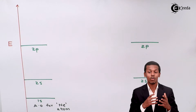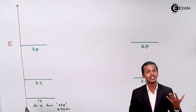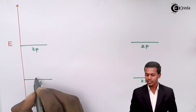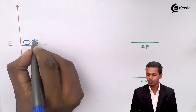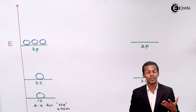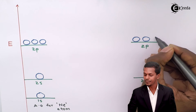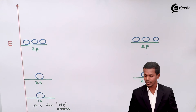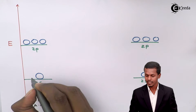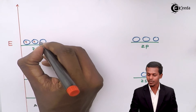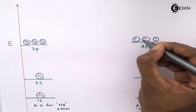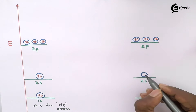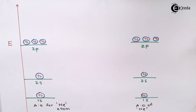Now let us fill in the orbitals. The 1s sub-shell has one orbital, the 2s also has one orbital, and the 2p sub-shell has three orbitals: 2px, 2py, and 2pz. There are two electrons in 1s, two electrons in 2s, and all three 2p orbitals are completely filled with electrons, giving a total of 10 electrons for each neon atom.